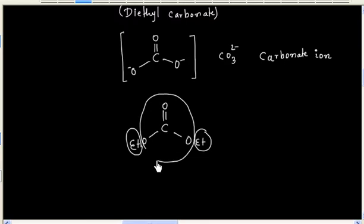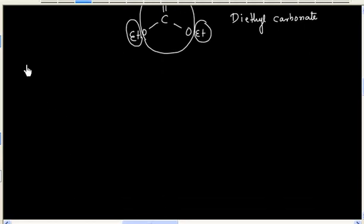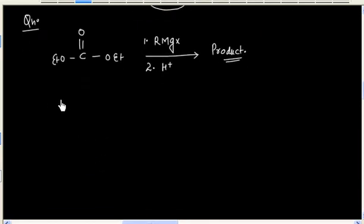So it has a carbonate unit and it has two ethyl groups. So this is called diethyl carbonate. Now let us consider this reaction. So diethyl carbonate is reacting with Grignard reagent followed by acidification. What will be the product? And in this case 3 moles of Grignard reagent is used.